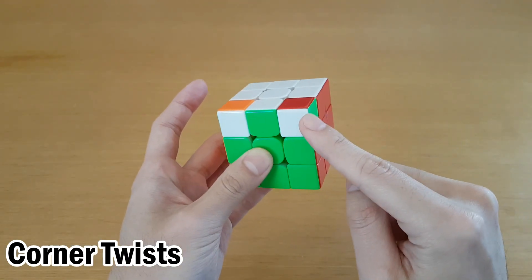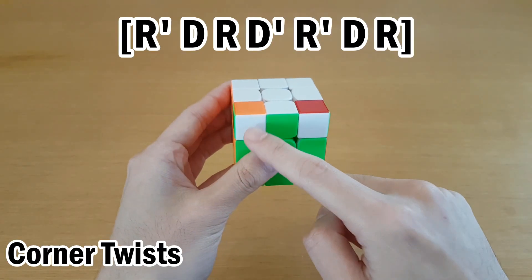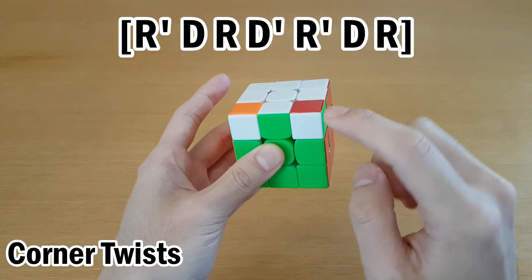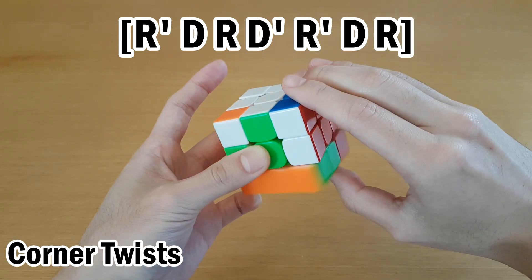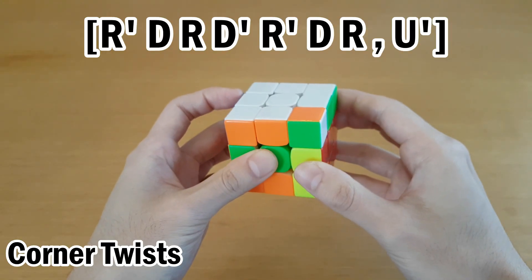For a two twist in the U layer, we'll twist these one by one by putting them at UFR and doing a twist alg. We start with the one that has white facing forward. So this one would be white facing side if it was here. So we start with this one and do this. And then move the other one here and do the reverse. And put it back.